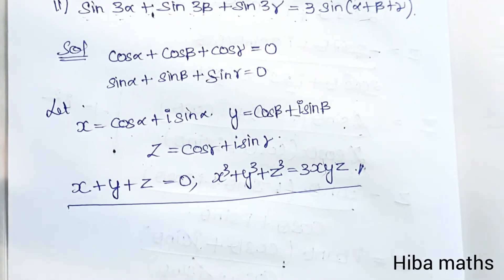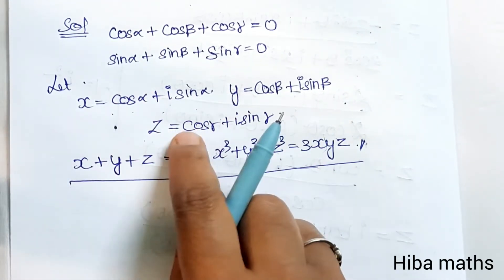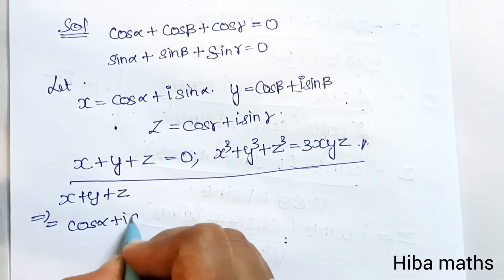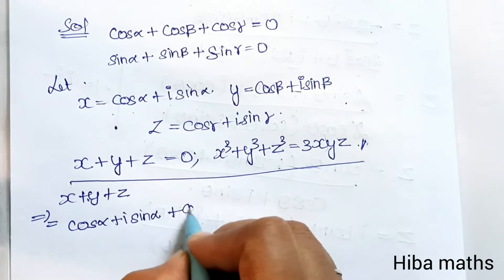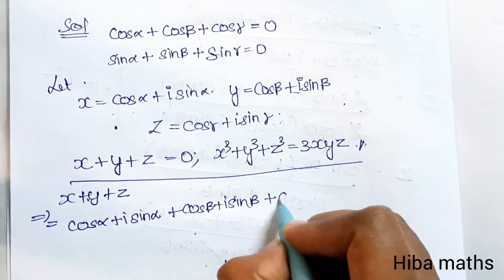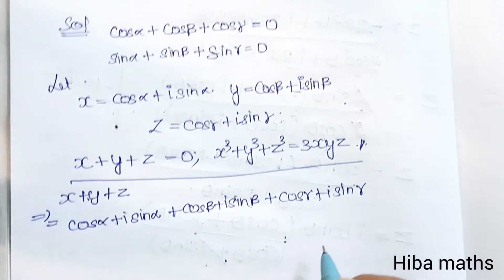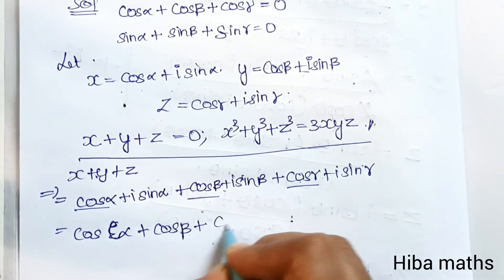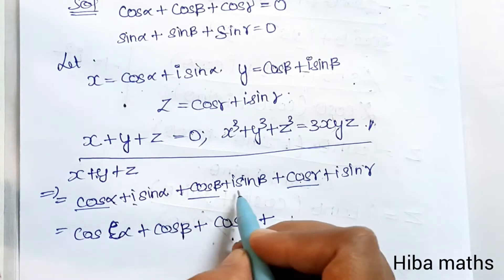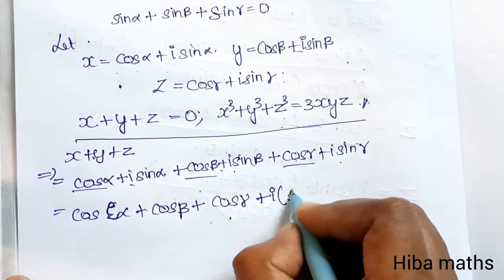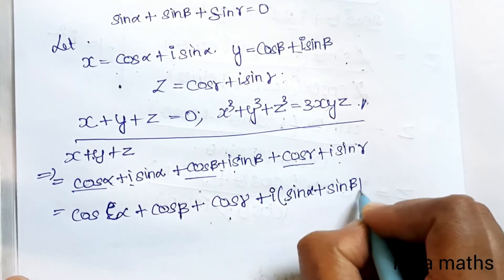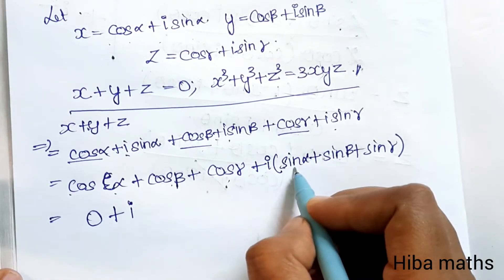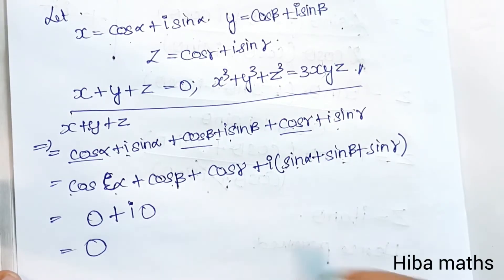First, x + y + z = (cos α + i·sin α) + (cos β + i·sin β) + (cos γ + i·sin γ) = (cos α + cos β + cos γ) + i·(sin α + sin β + sin γ) = 0 + i·0 = 0. So x + y + z = 0.